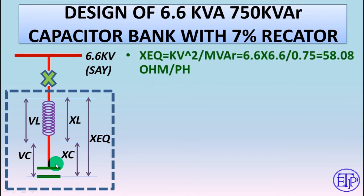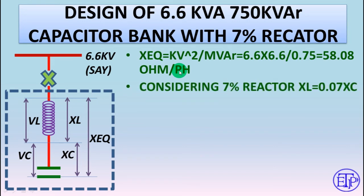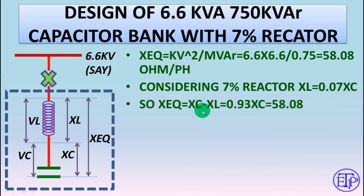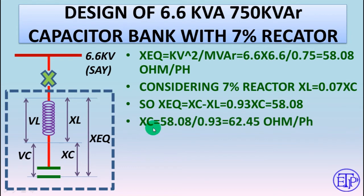XEQ equals kV² / MVAR. We know that impedance equals kV² / MVA, so from that we can calculate XEQ = 58.08 ohms per phase. We are designing with a 7% reactor, so XL equals 7% of XEQ. X equivalent equals XC minus XL, giving 0.93 × XE = 58.08, which means XE = 62.45 ohms per phase.